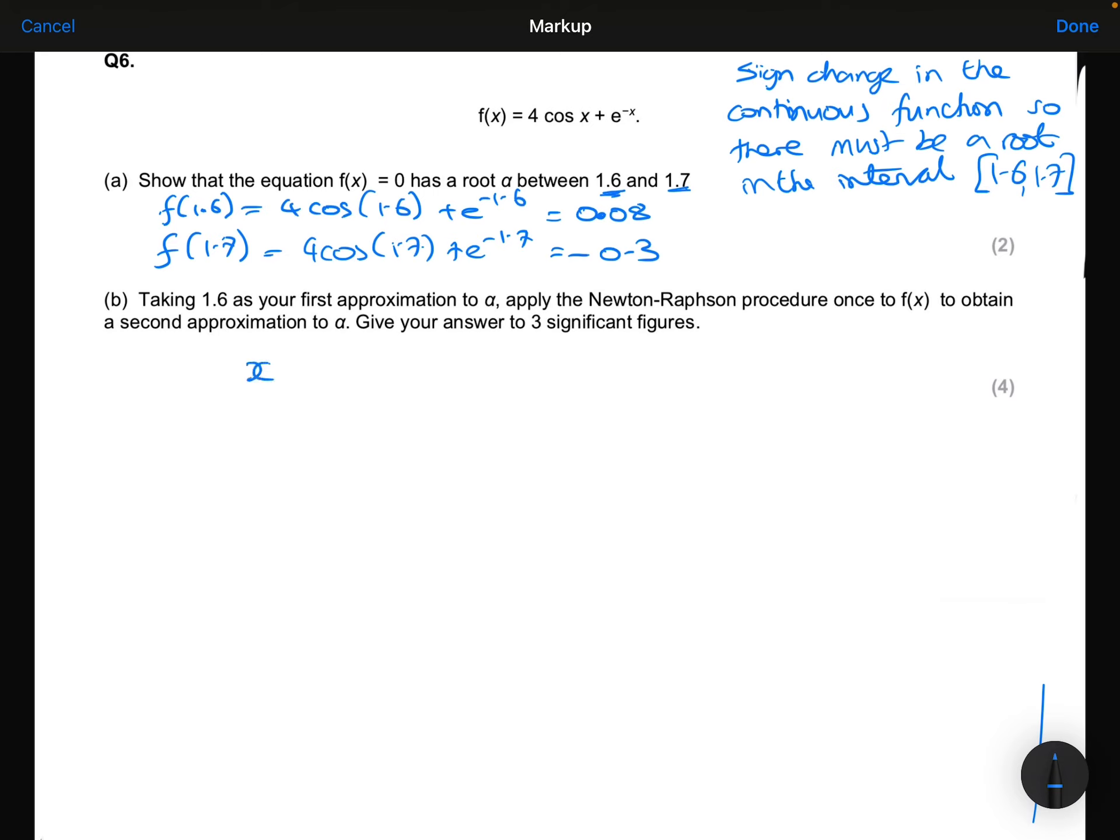The Newton-Raphson procedure formula is given in the formula booklet. It is x_n+1 equals x_n minus f(x_n) over f'(x_n).